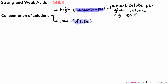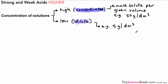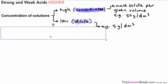So we could give an example of maybe 50 grams per decimeter cubed, and that's a measurement of concentration. And if we've got a dilute solution, that would be less concentrated — for example, maybe 5 grams per decimeter cubed. So that's a more dilute solution compared to the one above.